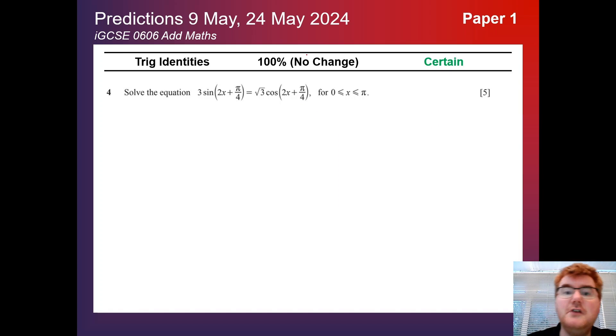Trig identities, no change at 100%. Always a big topic across Paper 1 and Paper 2, and this is no exception. Here's a typical equation you'd have to solve on AdMaths. Knowing how to work with this part here and working out all the solutions within the domain that you are given.